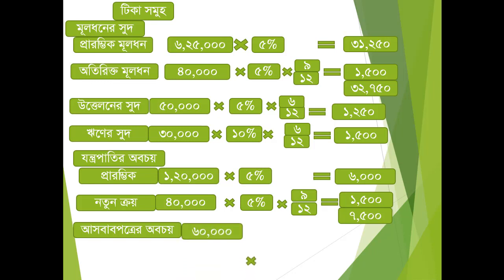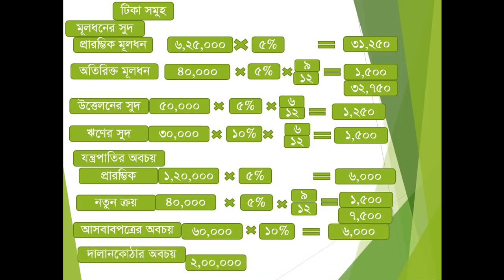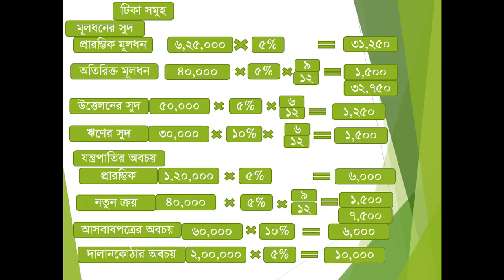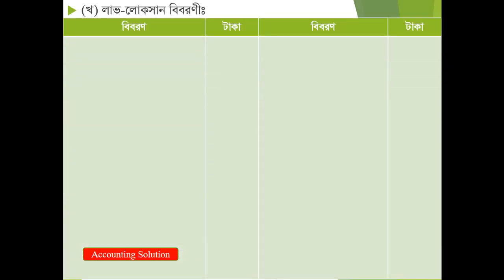We calculate average: 60,000 taka at 10% comes to 1,00,000. After that, to extract building — the building was 2 lakh. For 6 days — 2 lakh — applying the average rate comes out as total. Now in the statement, I look at the debit side — what I extracted in the schedule.